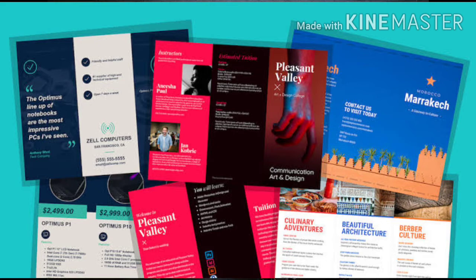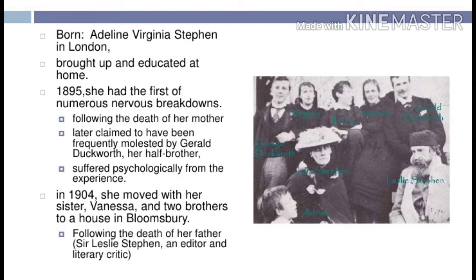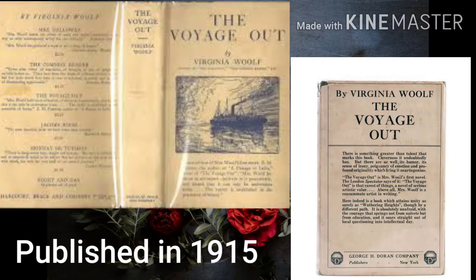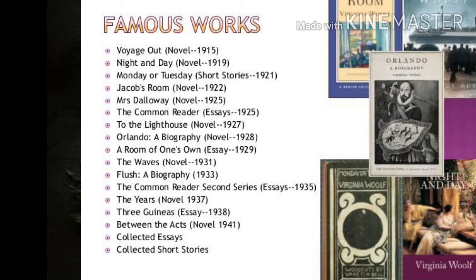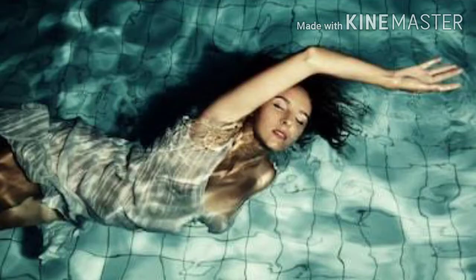Let us start our discussion. Virginia Woolf was born into a privileged English household in 1882 and she was raised by free-thinking parents. She began writing as a young girl and published her first novel, The Voyage Out, in 1915. She wrote modernist classics including Mrs. Dalloway, To the Lighthouse and Orlando, as well as pioneering feminist works like A Room of One's Own and Three Guineas. In her personal life, she suffered bouts of deep depression. She committed suicide in 1941 by drowning herself in a river at the age of 59.